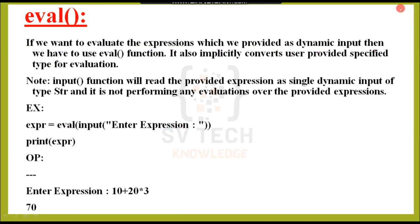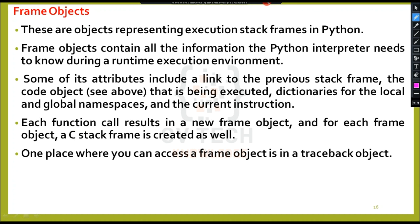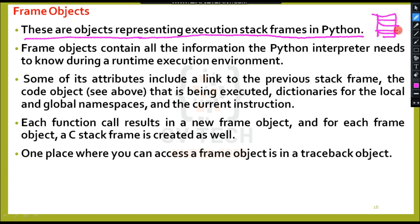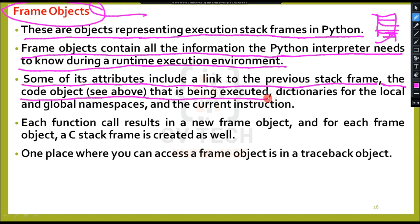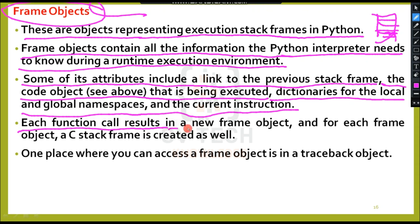Next, frame objects. What is a frame object? These are objects representing execution stack frames in Python. Frame objects contain all the information the Python interpreter needs to know during runtime execution. Some of its attributes include a link to the previous stack frame, the code object being executed, dictionaries for local and global namespaces, and the current instruction.